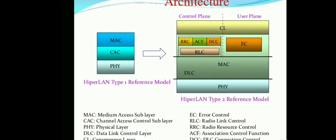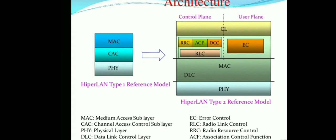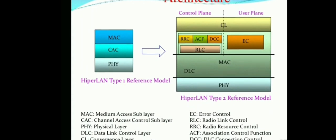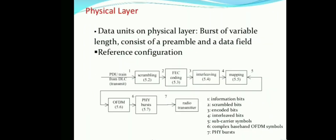The architecture of HiperLAN 1 consists of the MAC sublayer, the CSE (Channel Access Control sublayer), and the physical layer. The physical layer connects to other networks through the Data Link Control layer and a convergence layer. In the physical layer, data units consist of bursts of variable length comprising a preamble and data fields.